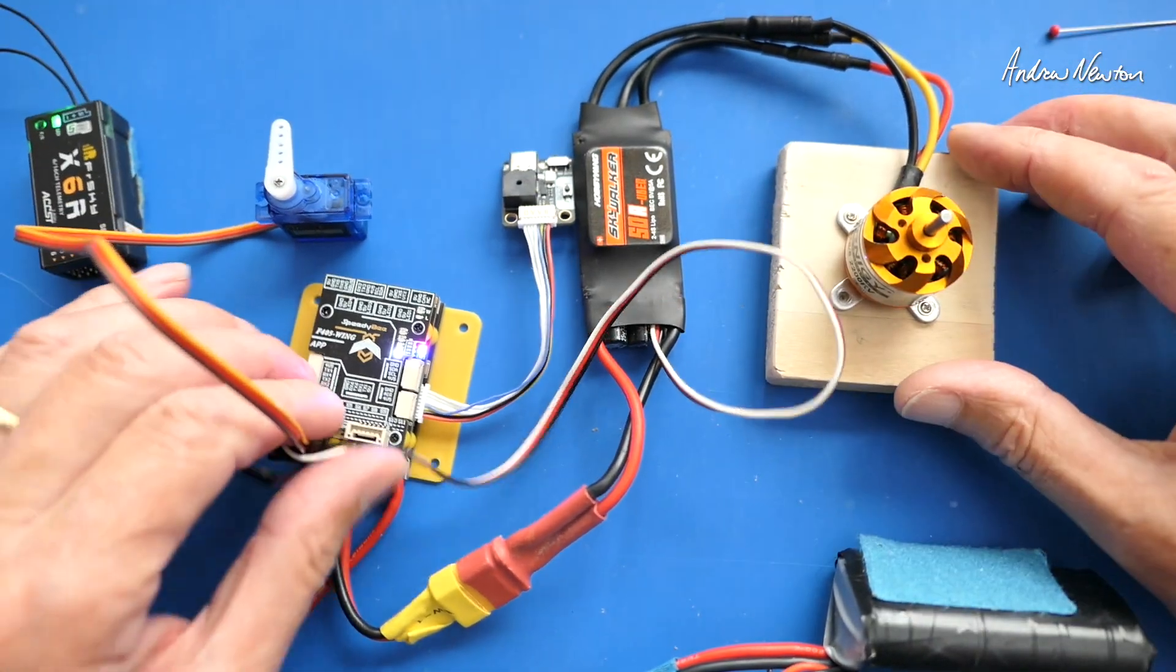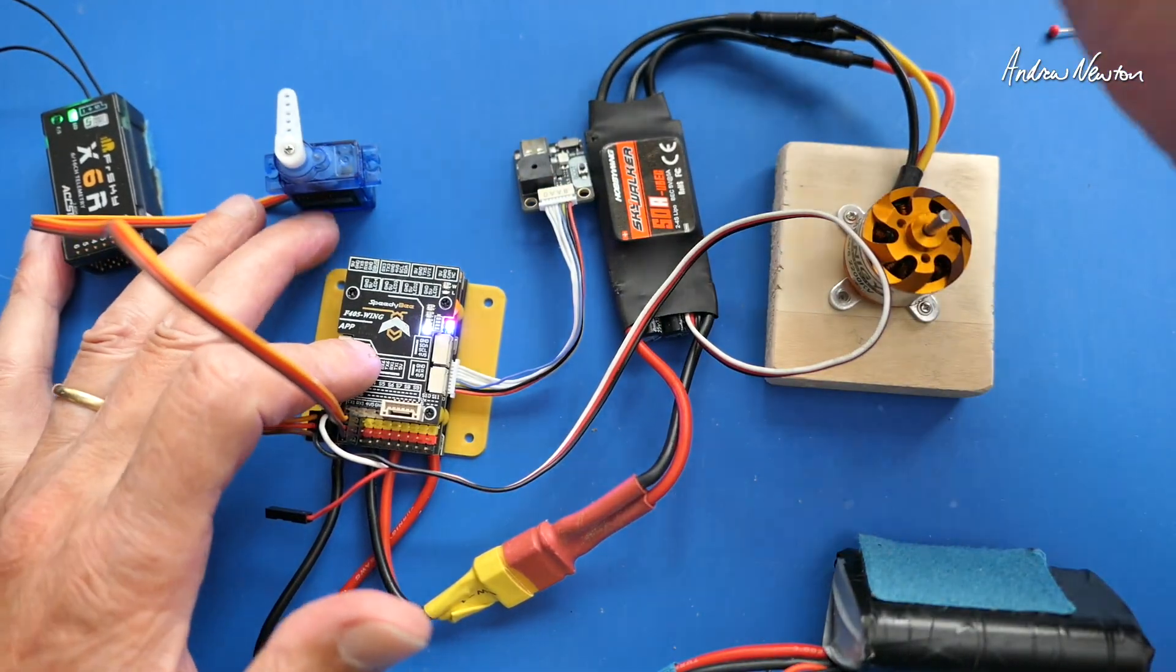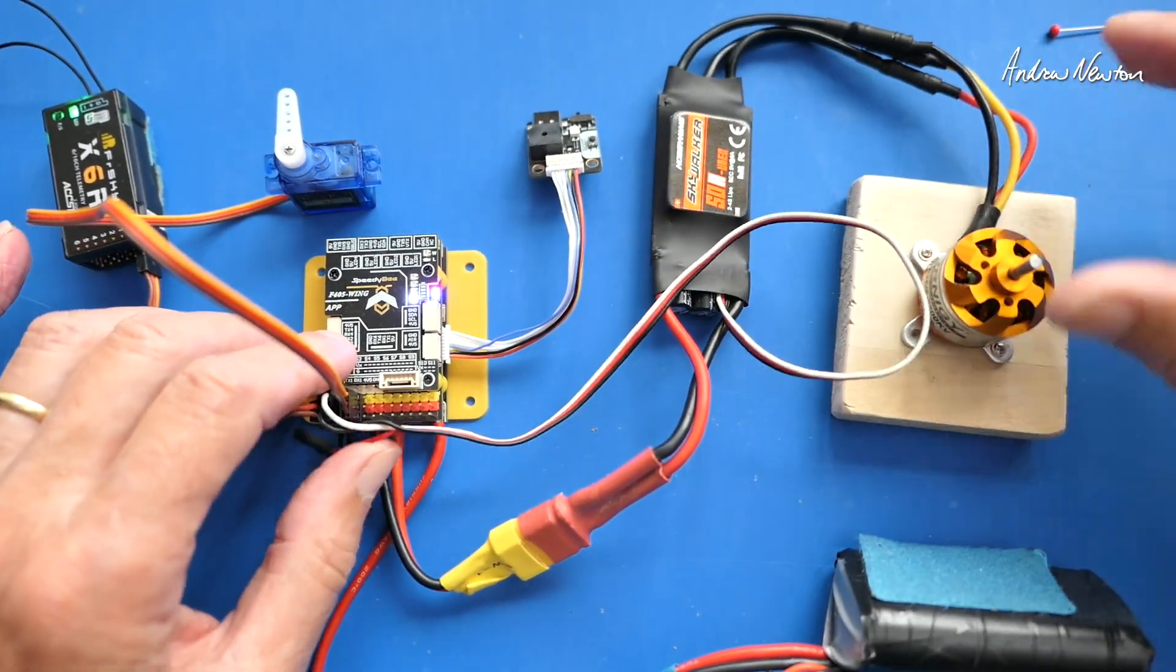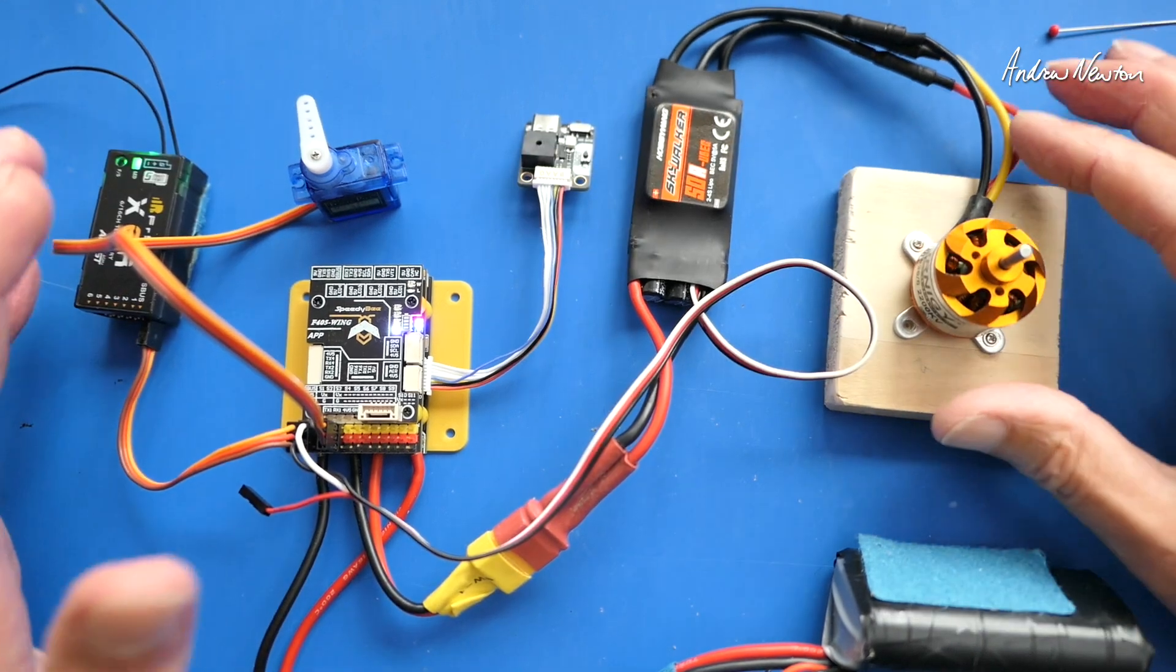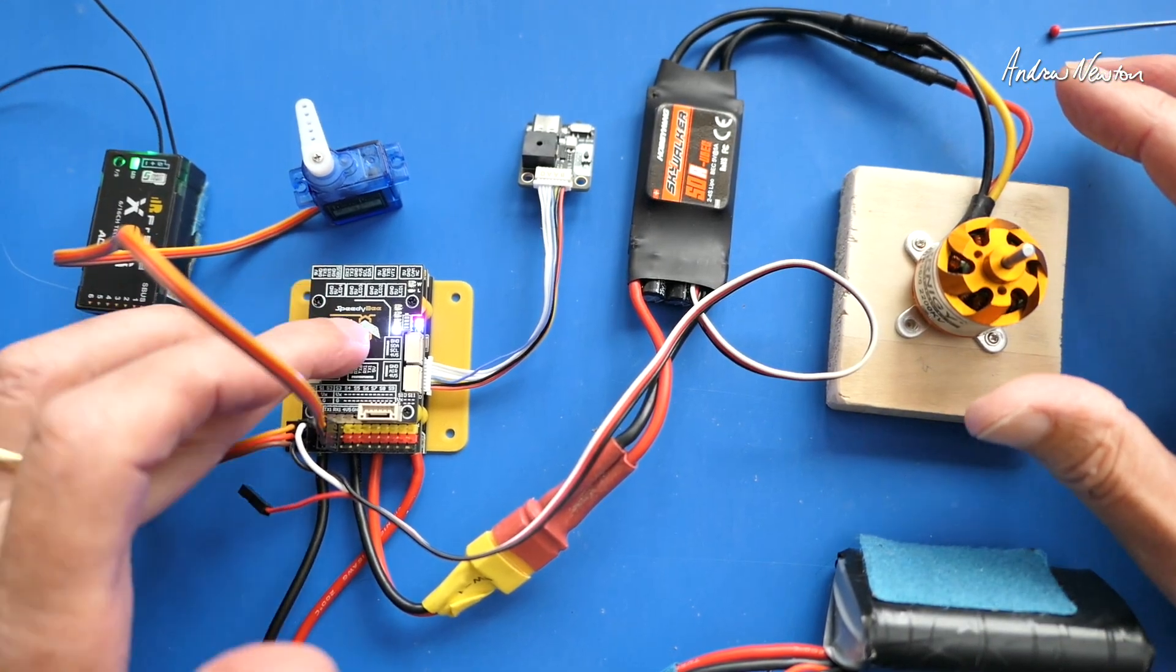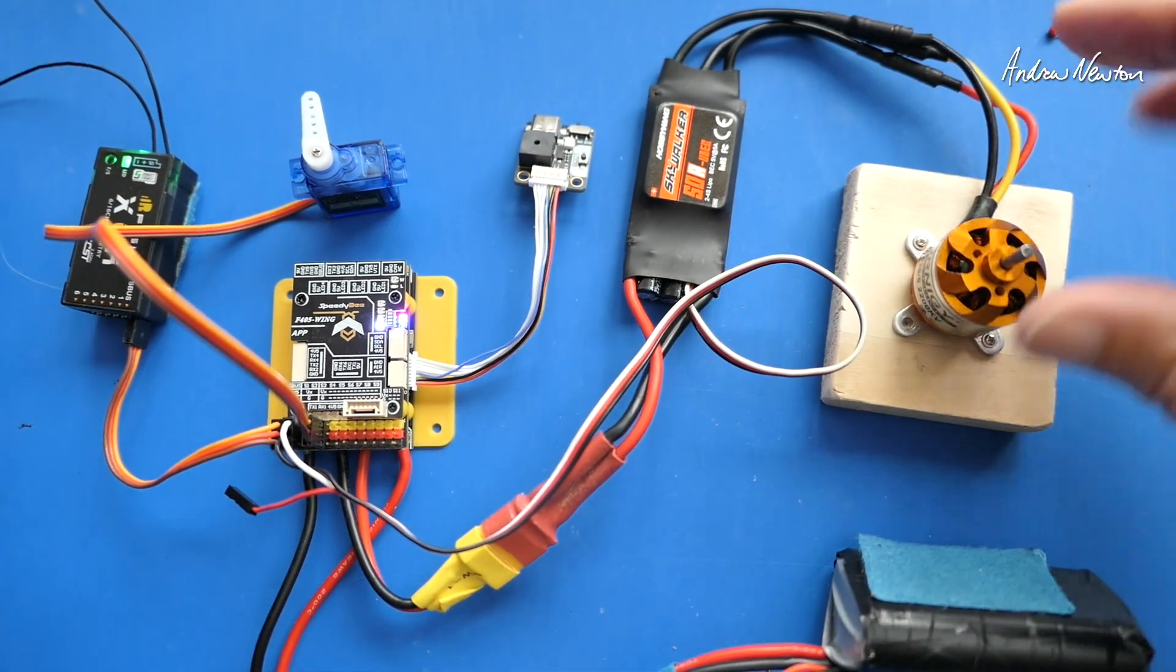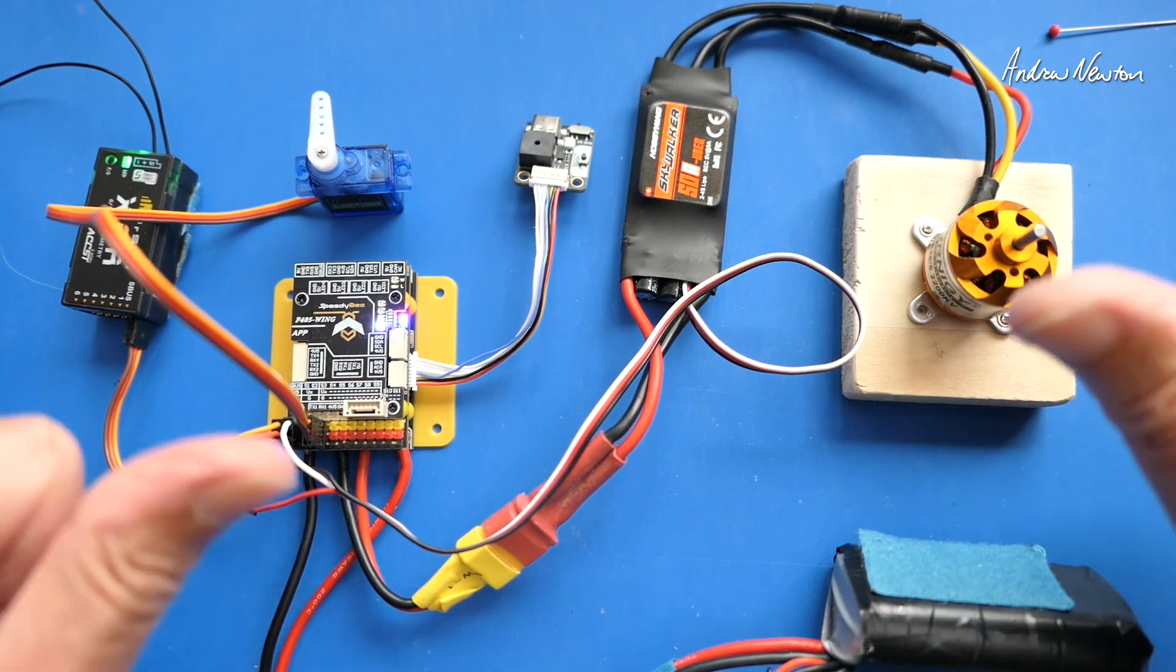So that's connection to flight control board at its absolute basic level with no FPV and no GPS. You would add those things later on, of course, for a proper flight control board FPV system, but that should give you a basic overview of the connections from the receiver flight control board, ESC servos and motor and battery. That'll do it for this one. Thanks for watching. See you in the next video.